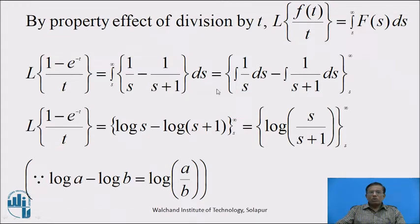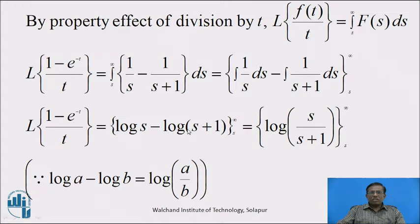Separating the integration for each term, we get integration of 1/s ds minus integration of 1/(s+1) ds, with limit s to infinity. Integration of 1/s with respect to s is log s, minus integration of 1/(s+1) ds gives log(s+1). Using logarithm property log a - log b = log(a/b), we write the right hand side as log[s/(s+1)], with limit s to infinity.